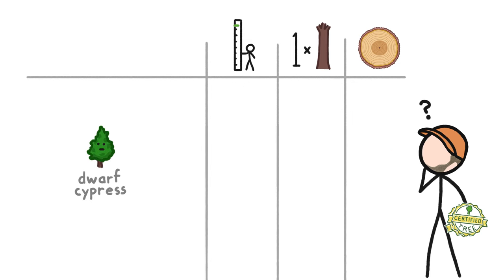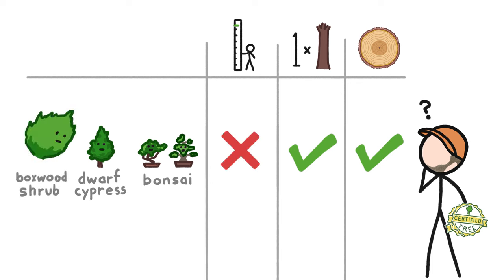Then you have trees like the dwarf cypress and various bonsai. They all have single trunks made out of wood, but they're short. Like, they're shorter than lots of shrubs, some of which also have woody trunks. So are those tiny trees not actual trees either?